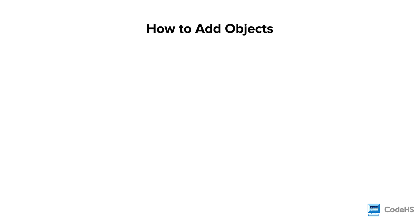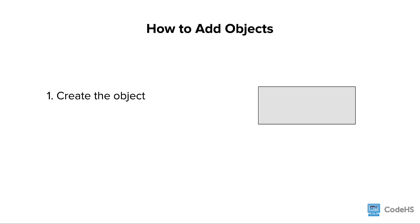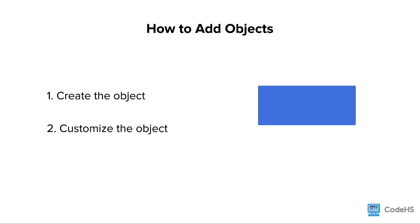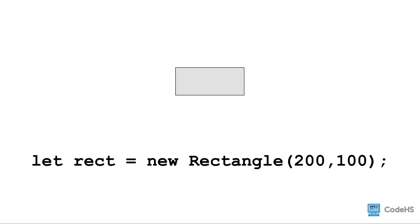Now let's try to add a rectangle to the canvas. We need to repeat the same three steps: create, customize, and add to canvas. First, we need to create a rectangle. To create a rectangle, we write the new keyword, the rectangle constructor, which is Rectangle with a capital R, followed by parentheses. And between the parentheses, we pass the dimensions of the shape.